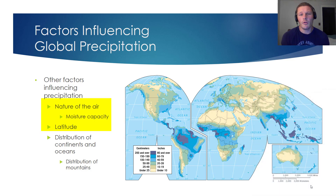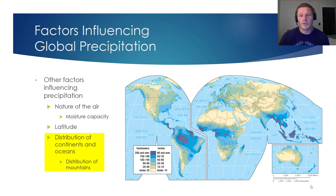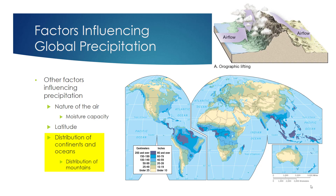As you work your way up towards the poles where the air is colder, the air simply doesn't have the capacity for water vapor that it would in a warmer region. Another factor influencing global precipitation is the distribution of continents and oceans — especially in the northern hemisphere, where there is a lot of landmass, you tend to see less precipitation towards the centers of those landmasses. Mountains can also impact precipitation patterns: windward slopes will tend to receive more precipitation than leeward slopes, and our Sierra Nevada mountains are a great example of just that.